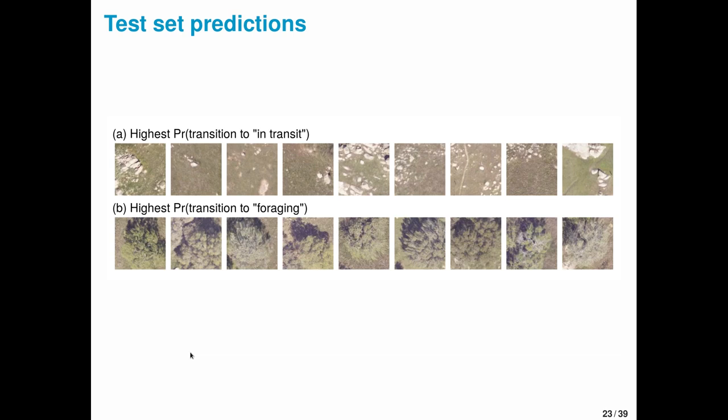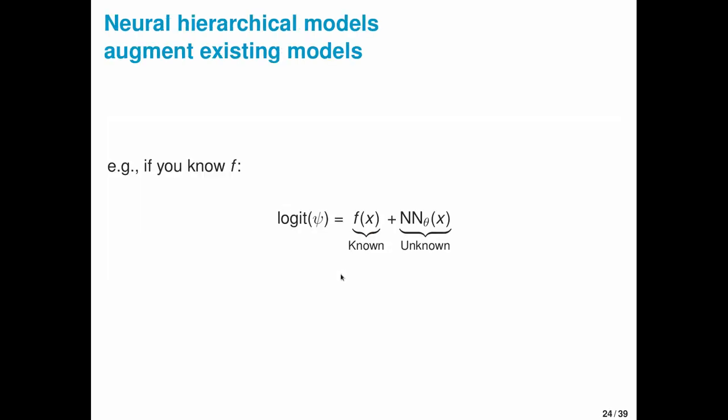These are the predictions for a withheld test set. Correctly, the model predicts the highest probability of transitioning to in-transit over bare ground and the highest probabilities of transitioning to a foraging state over large trees. One thing that I think is interesting here is at no point have we actually labeled any of these image chips as containing trees or not. In fact, the movement trajectories themselves, the combination of step sizes, turning angles, locations, and times, act as implicit labels for this model.